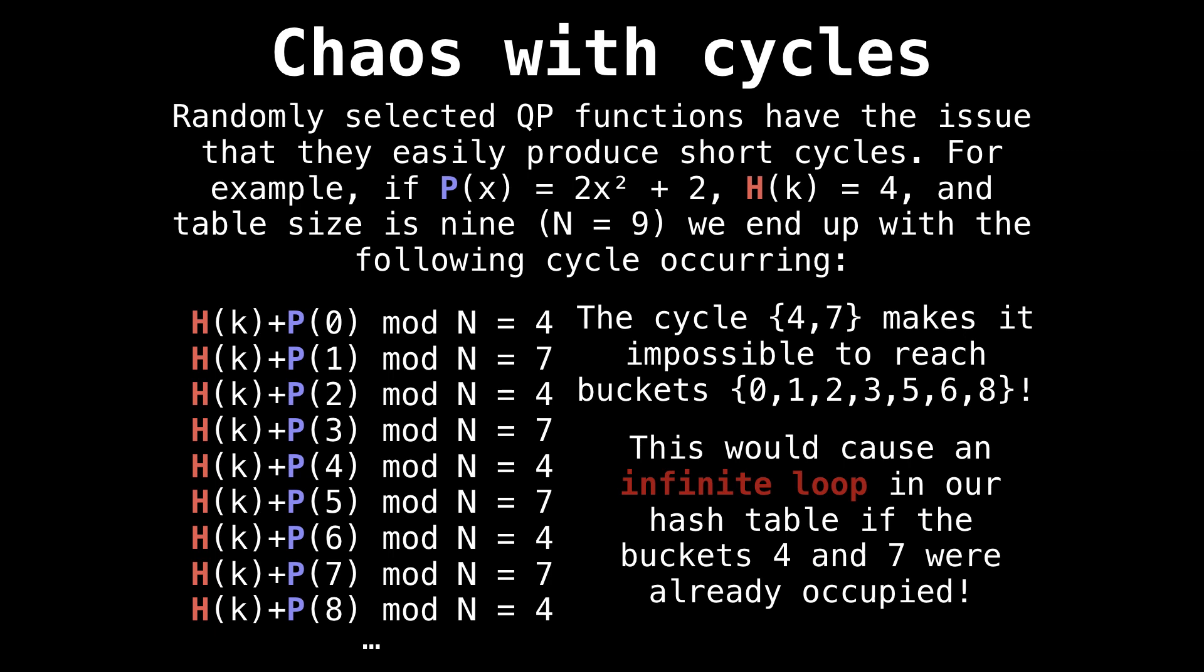So first time around, we would probe at position 0 and get 4, probe at position 1 and get 7. Suppose those two entries were full and then we would end up in a cycle again.